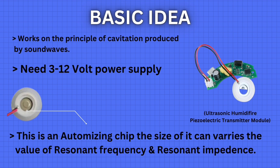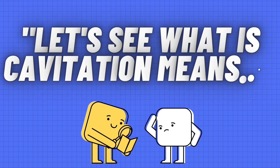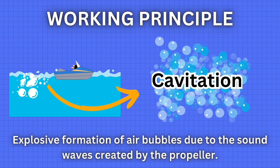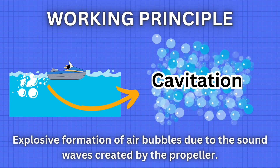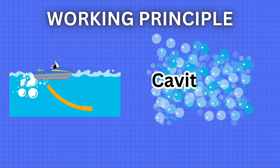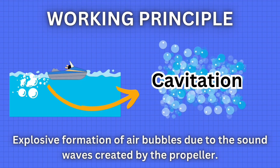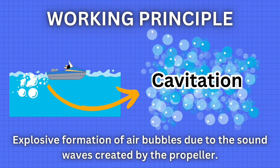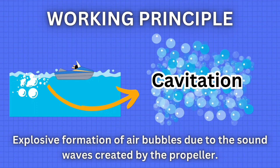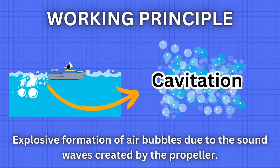Let's see what cavitation means, and then we will go to its principle. Basically, here you can see a boat moving on a water body, and while it's moving it creates water bubbles through its propeller. When the propeller hits the water surface it creates vibration, through which a sound wave occurs, and through that sound wave the water bubbles are created. As the oscillation speed increases to a level where the water particles can no longer follow the oscillating surface — or it exceeds the oscillation limit of the water — a momentary vacuum and a strong compression occur, leading to an explosive formation of air bubbles. This is the basic concept of cavitation.